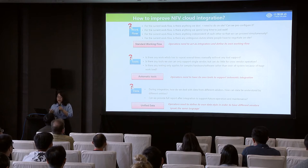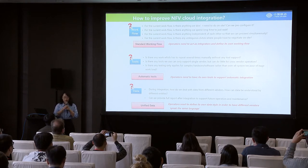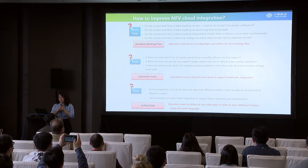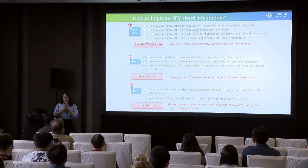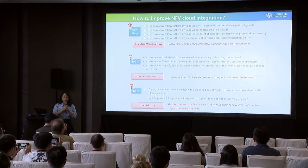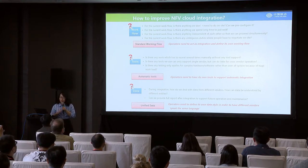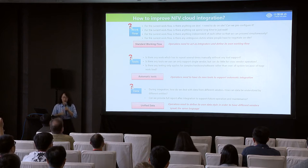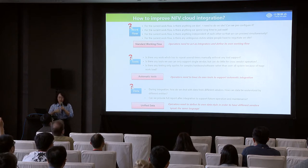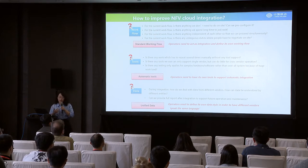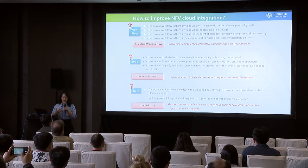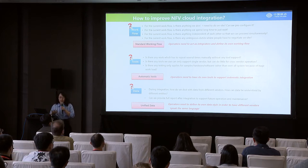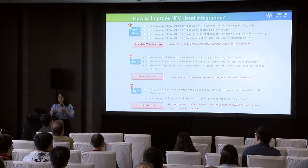We think that NFV cloud integration is the key, and we identified three key components that make integration difficult now but could be improved. The first is the working flow. Traditionally telco operators care less about working flow — that's something taken care of by vendors and integrators. But now with multiple vendors involved, operators need to look into this. We spent a lot of time at the beginning of this year talking with different vendors and integrators to see if there are things we can do beforehand, or processes we could run simultaneously. Looking into the working flow helped a lot to improve overall efficiency.